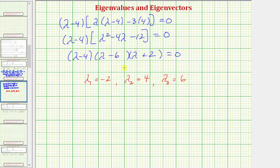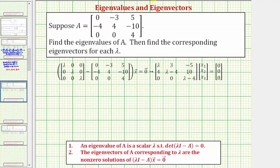Now we need to find the corresponding eigenvectors for each of these eigenvalues. To find the eigenvectors of A corresponding to lambda, we find the nonzero solutions to this equation. Let's find the eigenvectors corresponding to lambda sub one equals negative two. We have the difference of lambda I minus A times vector X equals zero vector. Substituting negative two for lambda gives us a first row of negative two, three, negative five.